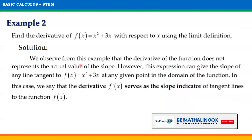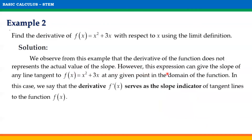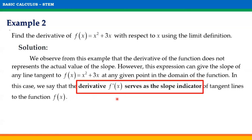We observe from this example that the derivative of the function does not represent the actual value of the slope. However, this expression can give the slope of any tangent line to f of x equals x squared plus 3x at any given point in the domain of the function. In this case, we say that the derivative f prime of x serves as the slope indicator of tangent lines of the function f of x.